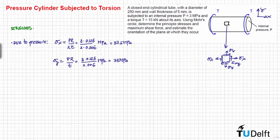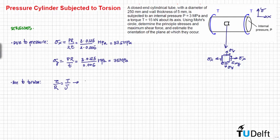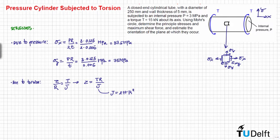Now we determine the stress due to torsion. Due to torsion we have only shear stress, so we use the torsional formula: tau divided by r equals the torque T divided by the polar moment of inertia. Therefore, the shear stress equals T·r divided by the polar moment of inertia. Using the thin-wall approximation, the polar moment of inertia equals 2π·r³·t, which simplifies the shear stress formula.